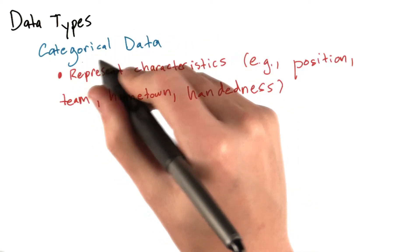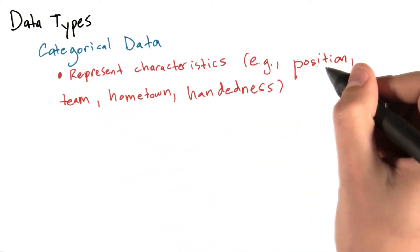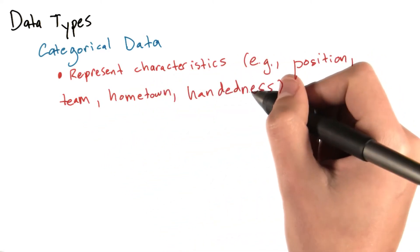Categorical data represents characteristics, such as a player's position, team, hometown, or even handedness.